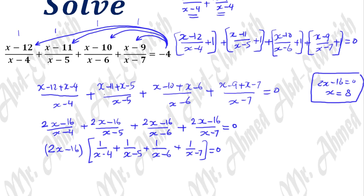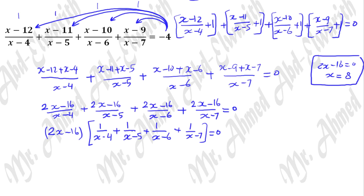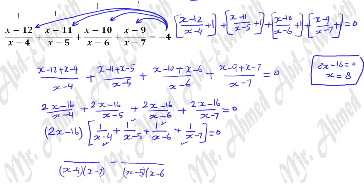Now we will work on the second factor: 1 over (x minus 4) plus 1 over (x minus 5) plus 1 over (x minus 6) plus 1 over (x minus 7). We group the first fraction with the fourth, and the second fraction with the third. Making a common denominator, the first group gives (x minus 7 plus x minus 4) over (x minus 4)(x minus 7), and the second group gives (x minus 6 plus x minus 5) over (x minus 5)(x minus 6).